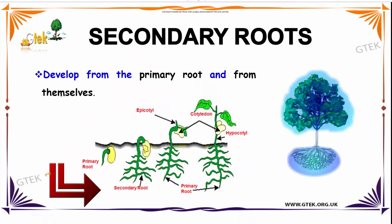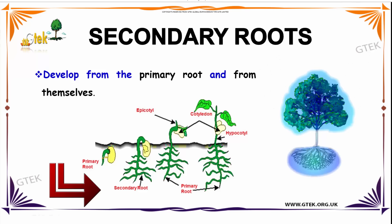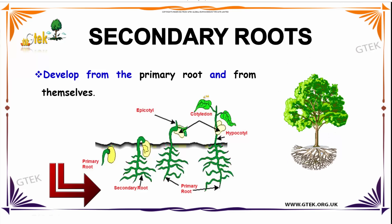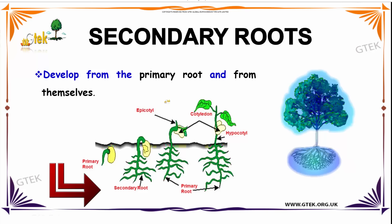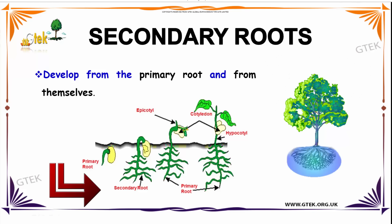Let us talk about the Secondary Root. It develops from the Primary Root and forms itself. You can see here is the Primary Root, after that the formation of Secondary Root, and finally the tree is formed. In between it has Cotyledon and Hypocotyl, and here is the Epicotyl.